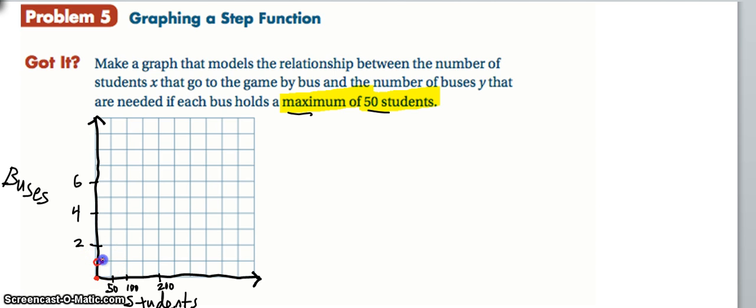So I put an open circle on one bus when my x is zero because zero students don't need a bus. But as soon as I go beyond zero students, I do need a bus all the way up until these 50 students. So then I put a closed circle.